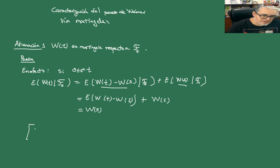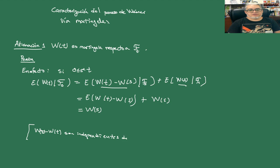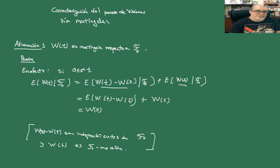El argumento es que W(S) menos W(T), es decir, las diferencias que estuvimos usando la vez pasada, son independientes de F_S, y W(S) es F_S-medible. Como estos dos son independientes, la esperanza es cero, y tenemos que esto es W(S). Eso prueba la afirmación: W(t) es martingala respecto de F_t.